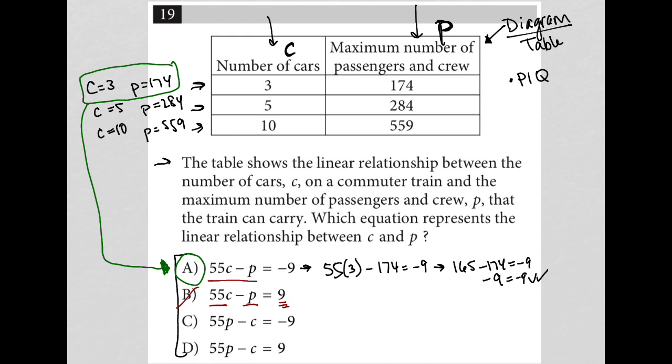And then choice C, we're multiplying 55 times P, so 55 times 174, which is a huge number, minus just 3 is not going to give me a negative 9. So C is gone and D is gone. Choice A is the best answer, and I think this is the fastest way to get there.